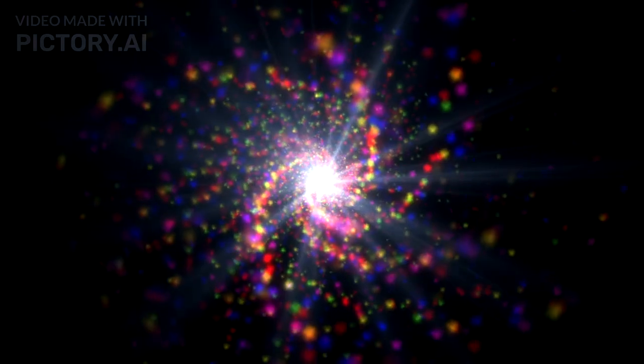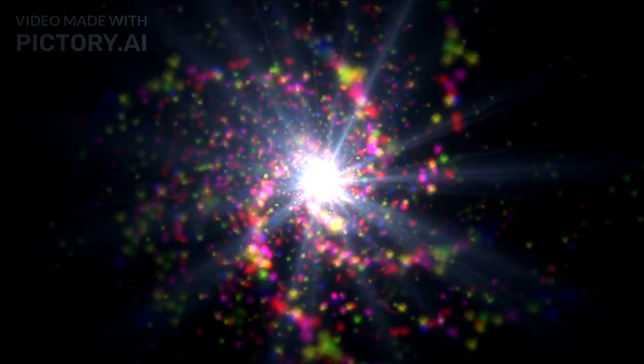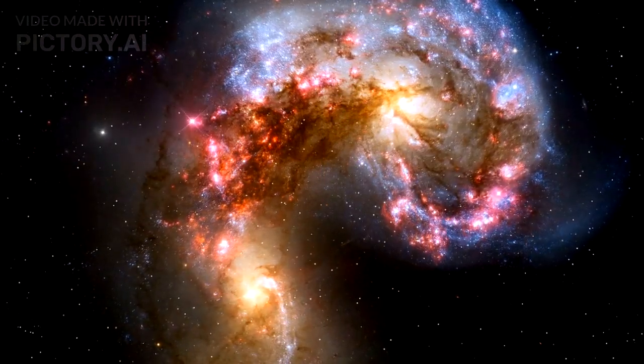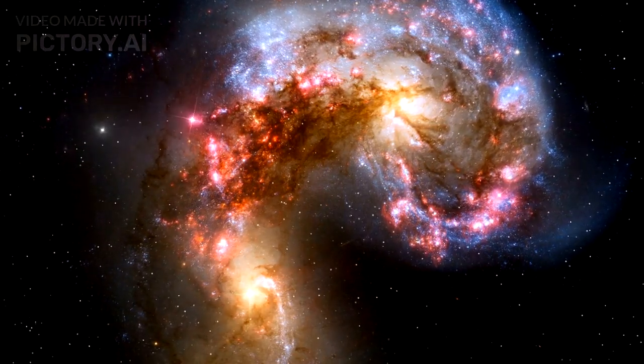The story of Andromeda isn't complete without considering its dynamic future. Unlike a solitary island in the cosmic sea, Andromeda is surrounded by a retinue of smaller satellite galaxies. These smaller galaxies orbit the larger Andromeda, some undergoing a process known as tidal stripping.